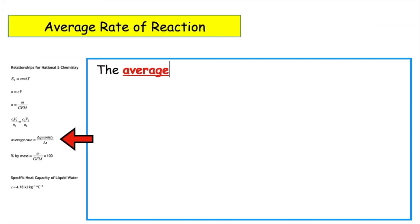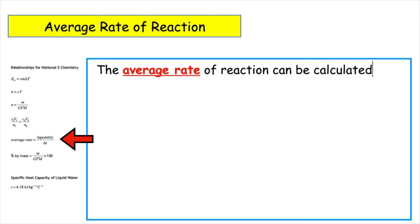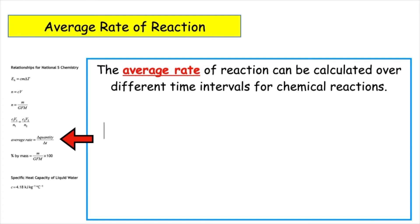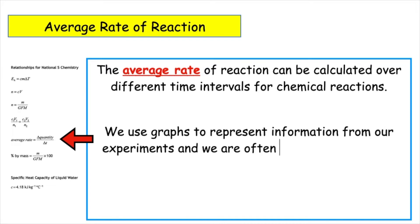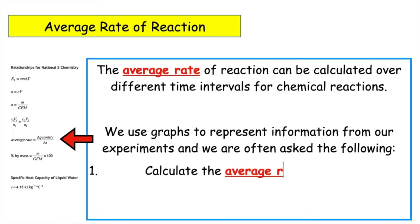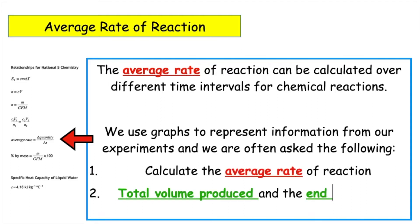The average rate of reaction can be calculated over different time intervals for chemical reactions. We use graphs to represent information from our experiments, and we are often asked to do one of two things: calculate the average rate of reaction, or calculate the total volume of gas being produced and the end point of the reaction.